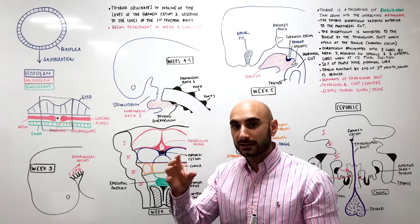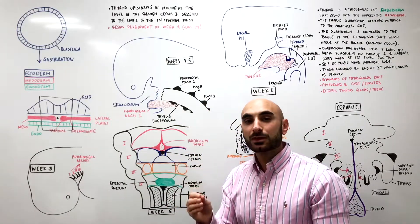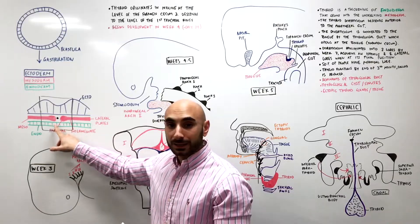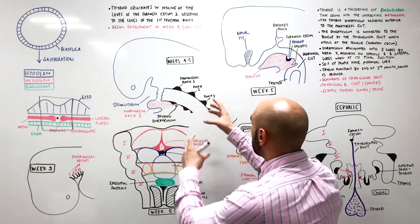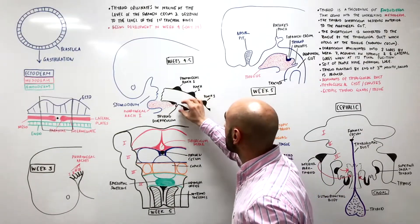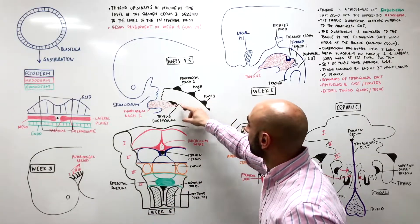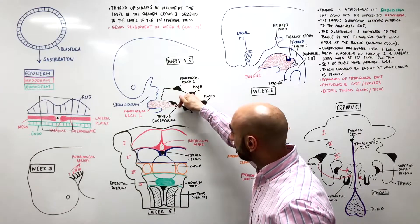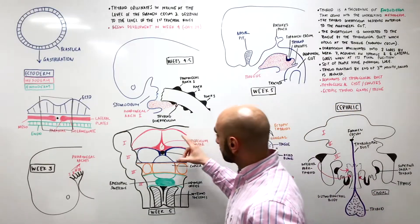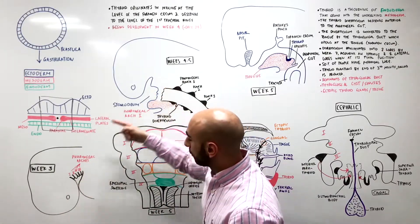The foramen cecum sits between the anterior part of the tongue and the posterior part of the tongue, and that's where the thyroid originates from. It's originally endodermal tissue — from the green layer — and that eventually will invade into the mesodermal tissue. This happens at about day 25, week 4. At the foramen cecum, the thyroid diverticulum penetrates down into the mesodermal tissue and begins its development.